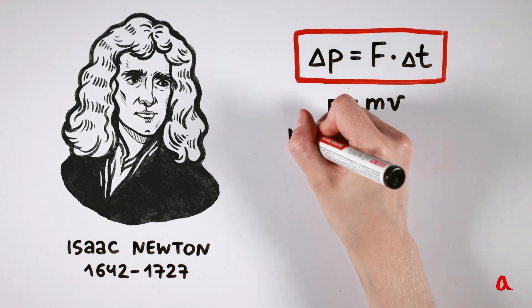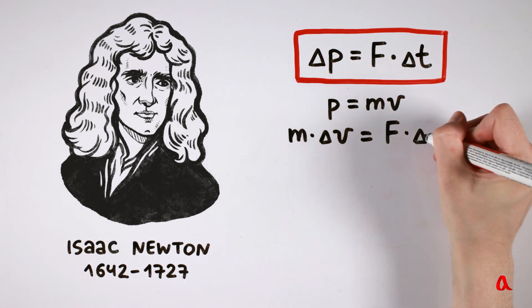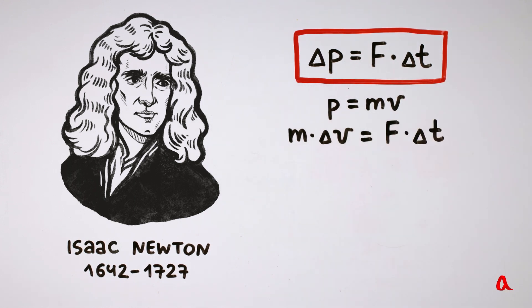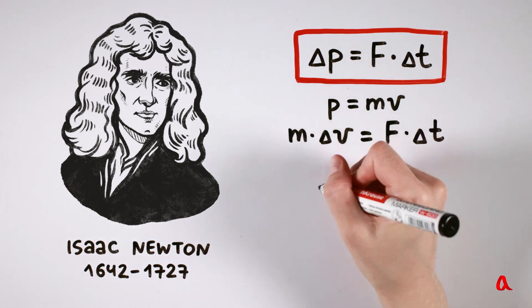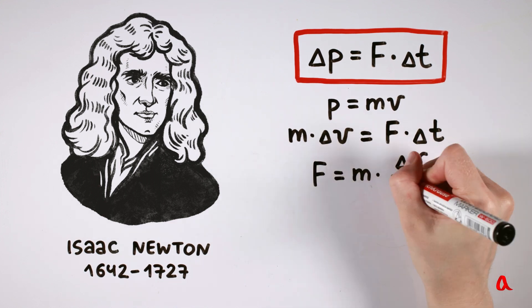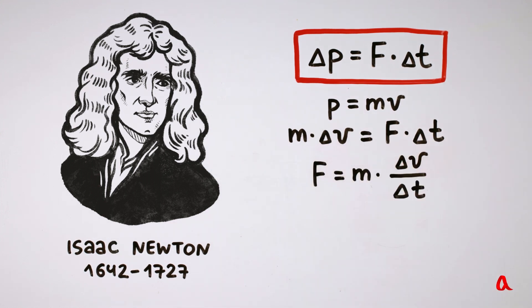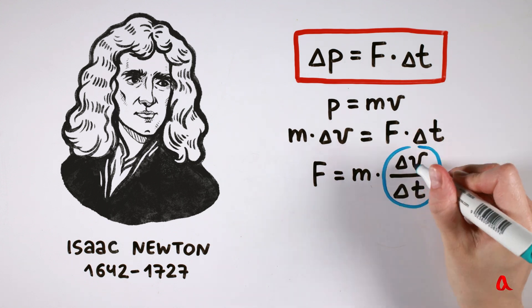Thus, m by delta v equals f by delta t. Let us transform this equation into f equals m by delta v divided by delta t. But delta v divided by delta t is a body's acceleration.